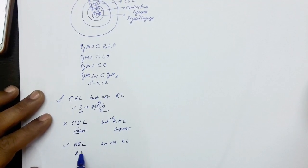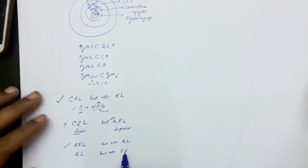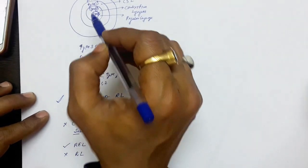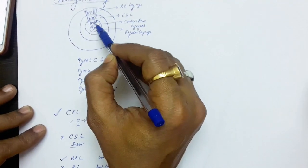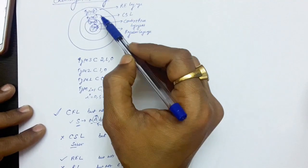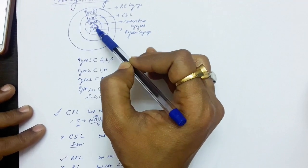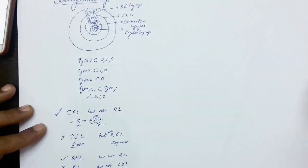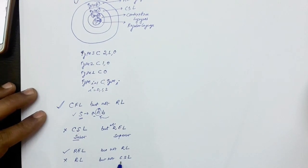Now consider: a language is regular but not context-sensitive. This is not possible. If a language is regular, it belongs to the smaller set — Type 3 — which is actually a subset of Type 1 (context-sensitive) and Type 2. So if a language is regular, it must also be context-sensitive.